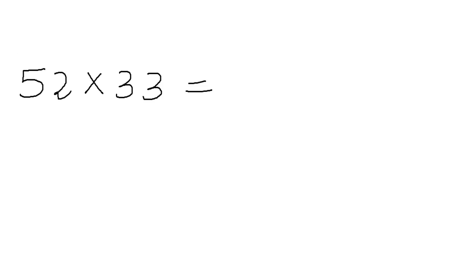Now suppose if we have to multiply 52 times 33. Then as I said to get the first digit of the number we multiply the first digit of both these numbers which is 5 into 3. So 15 will come here.